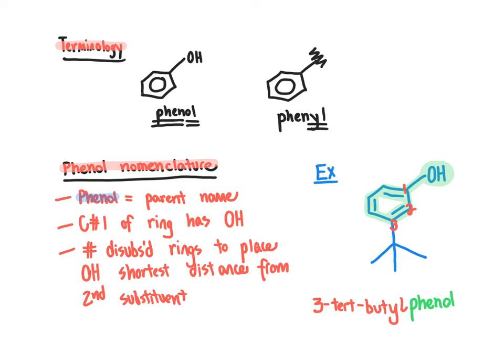Keep in mind there are no places in this molecule where we need to assign R/S or E/Z stereochemistry. The stereochemistry of the alkene bonds within the ring are pre-established because the ring constrains these bonds, so the molecule adopts a fixed shape. There is no need to define these pi bonds as E or Z.